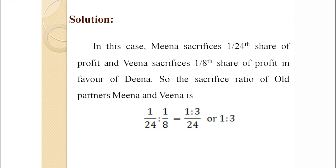In this case, Meena sacrifices 1/24 share of profit and Veena sacrifices 1/8 share of profit in favor of Dina. So the sacrifice ratio of the old partners Meena and Veena is 1/24 : 1/8, that is 1:3.